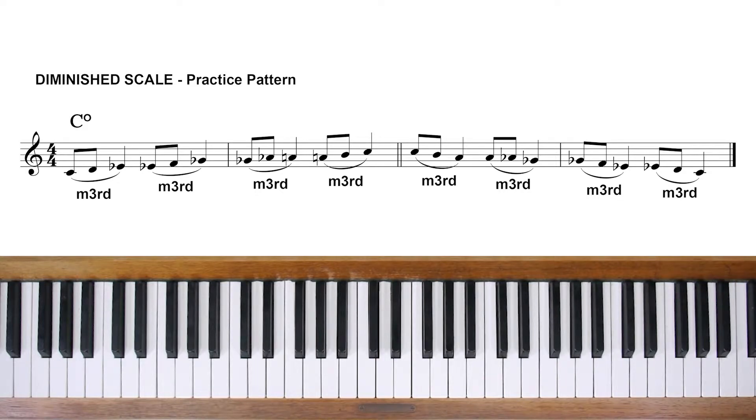Remember how diminished chords are grouped in three families, the four chords in each family sharing the same notes? Well, that means there are only three diminished scales as well, because each one will fit all four chords in the relevant family.